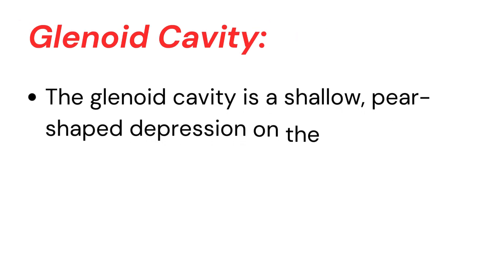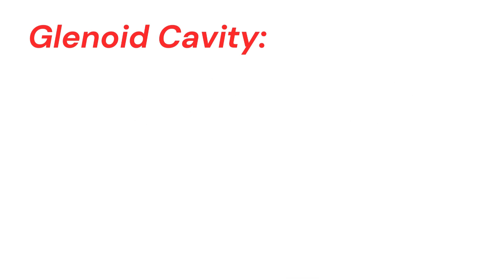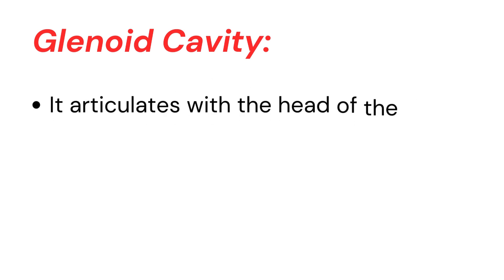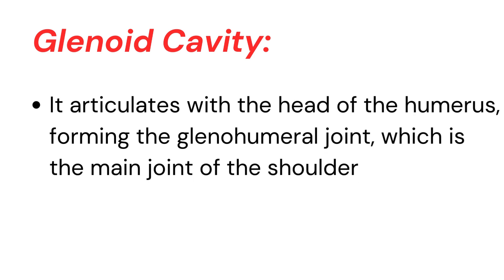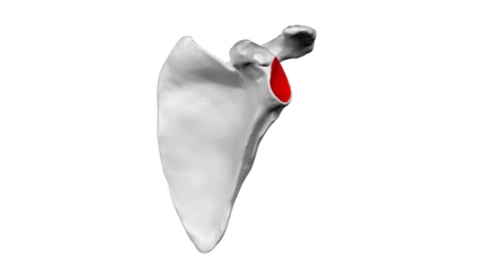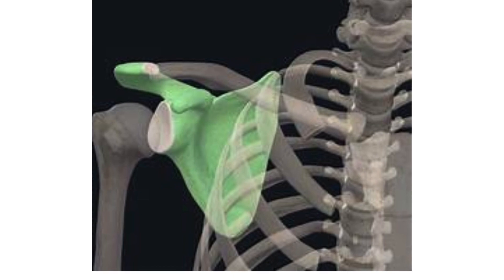Glenoid cavity. The glenoid cavity is a shallow, pear-shaped depression on the lateral aspect of the scapula. It articulates with the head of the humerus, forming the glenohumeral joint, which is the main joint of the shoulder.